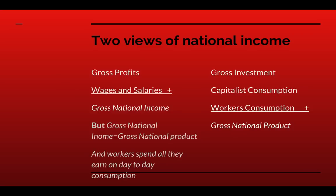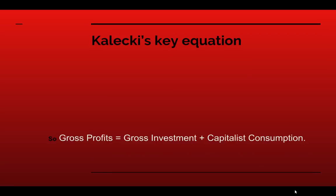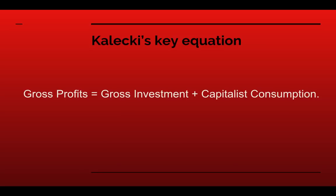It's a reality of class society that workers are forced to spend all they earn on day-to-day consumption. They're not in a position to save and accumulate capital, because if they were, they wouldn't be members of the working class — they'd become capitalists. So we can cross out wages and salaries and workers' consumption, because all wages and salaries go on workers' consumption. Since gross national income equals gross national product, we're left with gross profit on one side and gross investment plus capitalist consumption on the other. And here we come to Kalecki's key equation: gross profits are equal to gross investment plus capitalist consumption.